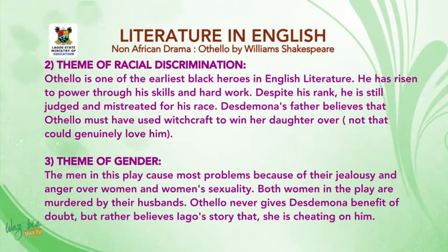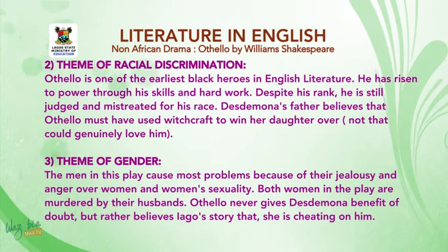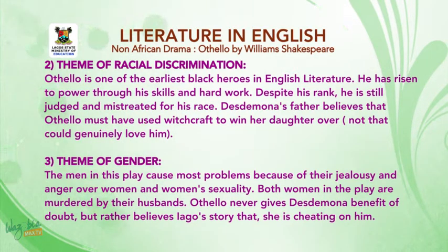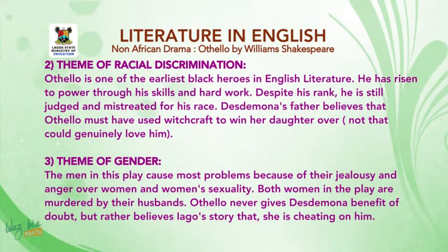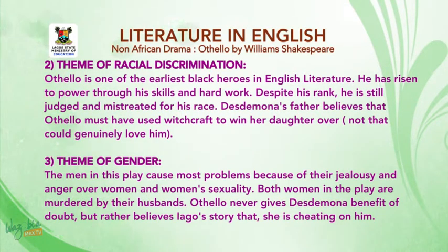The next theme is the theme of racial discrimination. Othello is one of the earliest black heroes in English literature. He has risen to power through his skills and hard work. Despite his rank, he is still judged and mistreated for his race. Desdemona's father believes that Othello must have used witchcraft to win his daughter over, not that she could genuinely love him.